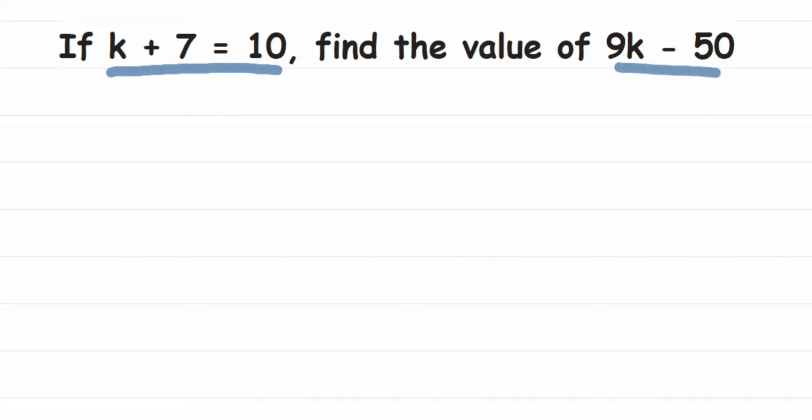We're going to take the equation k plus 7 equals 10, and from there find the value of k. Since this is given to us, let's transpose 7 to the other side.